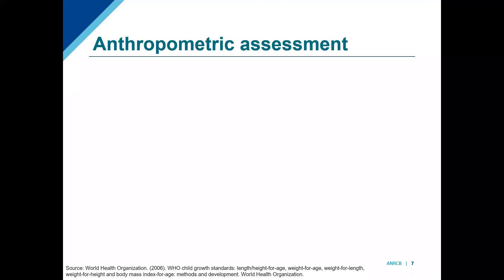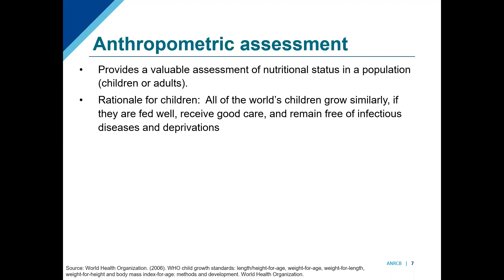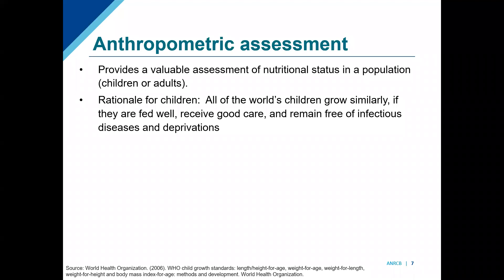Let's start with the A — anthropometry. This is a valuable method to know about the nutritional status of an individual or population of children, adults, and really all age groups. The rationale for children is important: even though we think about populations throughout the world being different, if mothers and children are well-fed, receiving good care, healthy, free of infectious diseases, not suffering from deprivations, and have good access to services, what we find is that mothers and children in this kind of positive environment all grow similarly. We do not have genetic differences in how well we grow, so we can use a set of health standards of healthy growth for all children throughout the world.